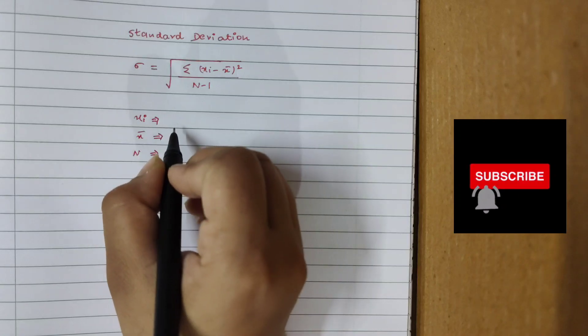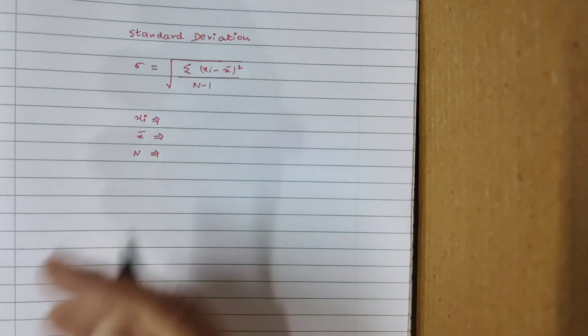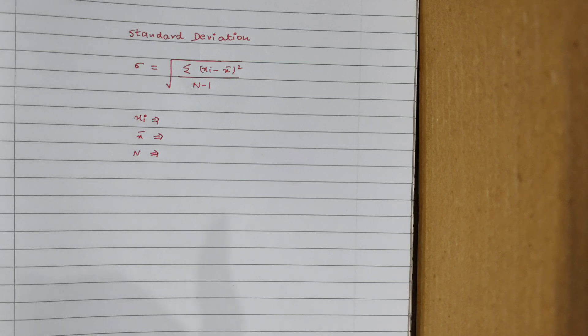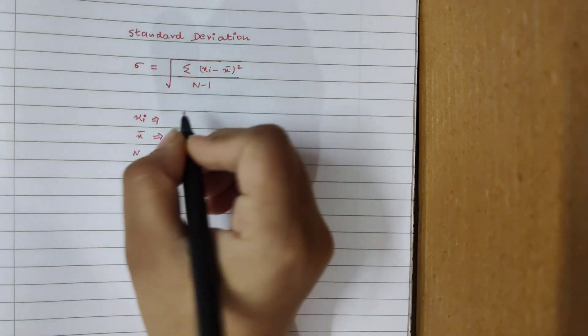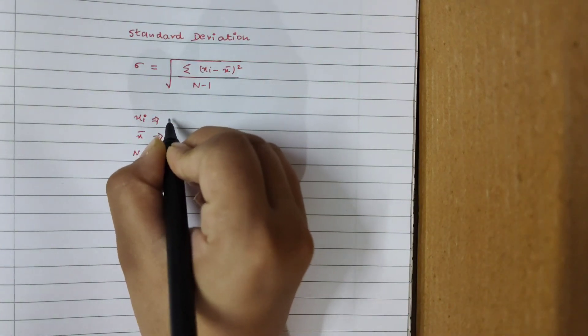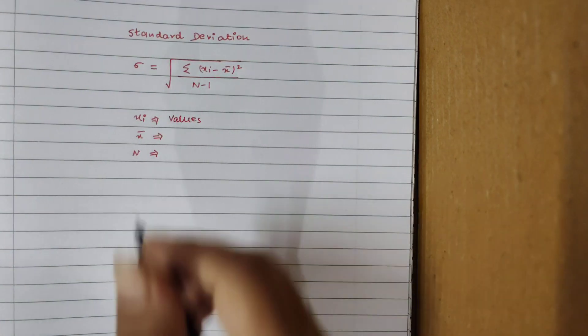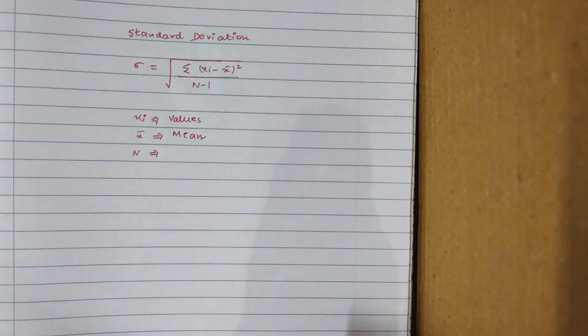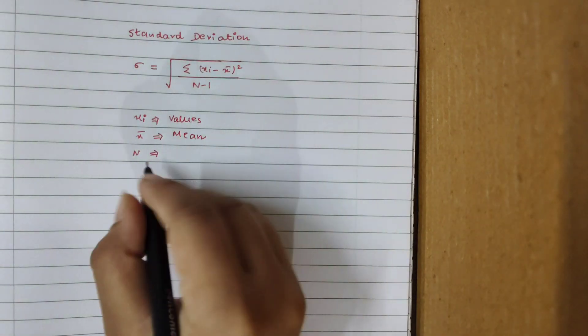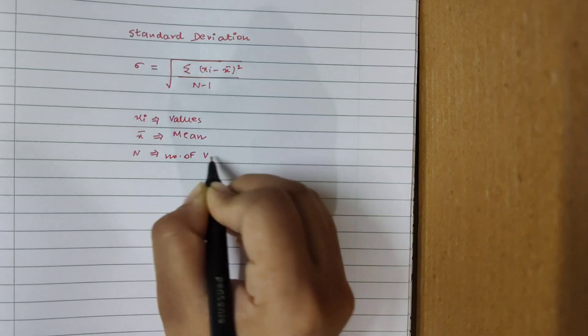xi represents the values that you have. Maybe you're doing a particular experiment wherein you're getting your readings in milliliters, or grams, or moles. So whatever readings you're getting, that will represent xi. So it can be x1, x2, x3, depending on how many readings or observations you're getting. xi is nothing but your observations, the values that you have obtained after doing your experiment. x bar represents the mean. I will tell you the formula to calculate mean in some time.